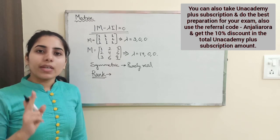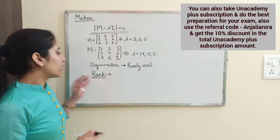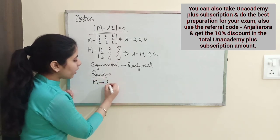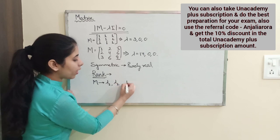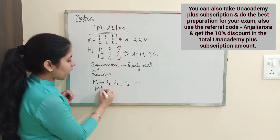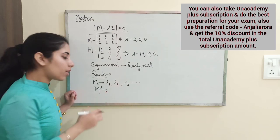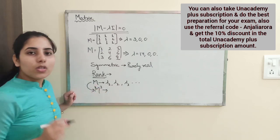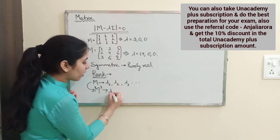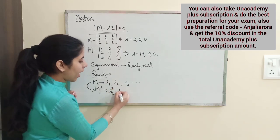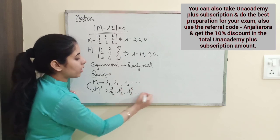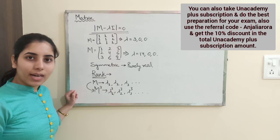Another important point: if for a matrix M the eigenvalues are lambda-1, lambda-2, lambda-3, and so on, then when you transform M — say to M cubed — the eigenvalues transform in the same way. You can directly write the new eigenvalues by applying the same transformation to each original eigenvalue, without solving the characteristic equation again.